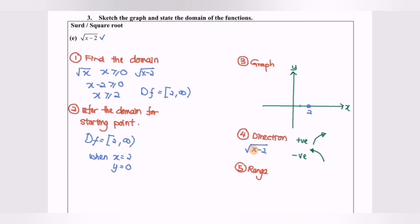For this case, √(x − 2), the coefficient of x is positive, so the graph goes to the right. Now we determine the range. The range refers to the values of y. The minimum value of y is 0 and the maximum is positive infinity, so the range is [0, +∞).